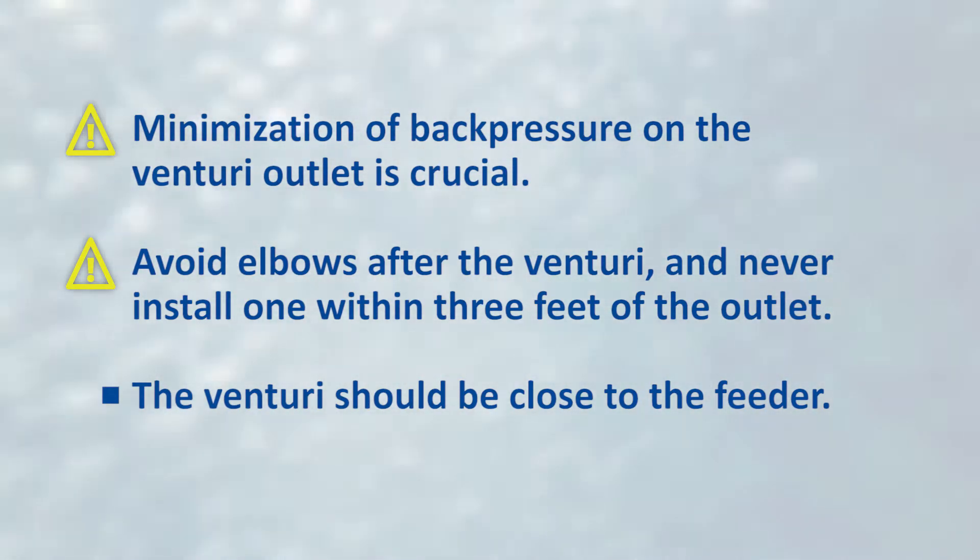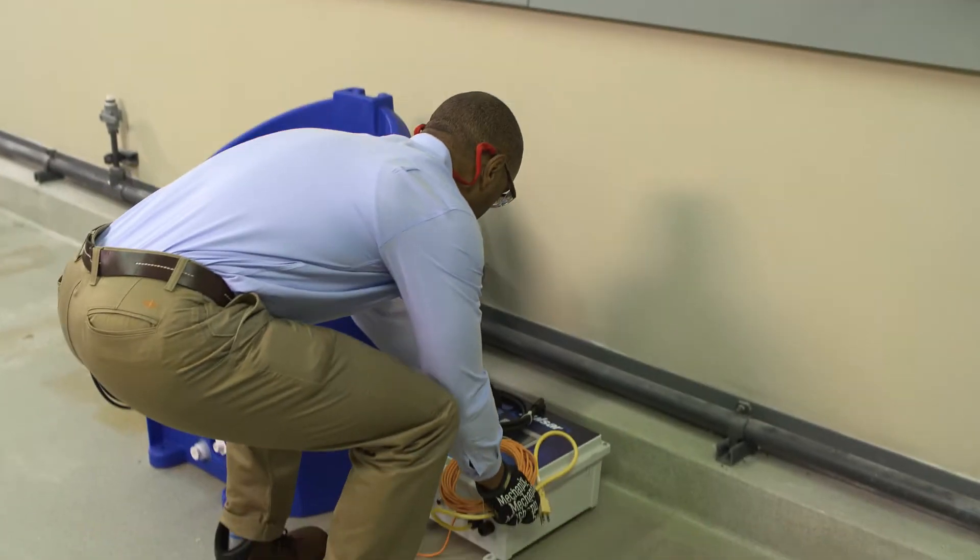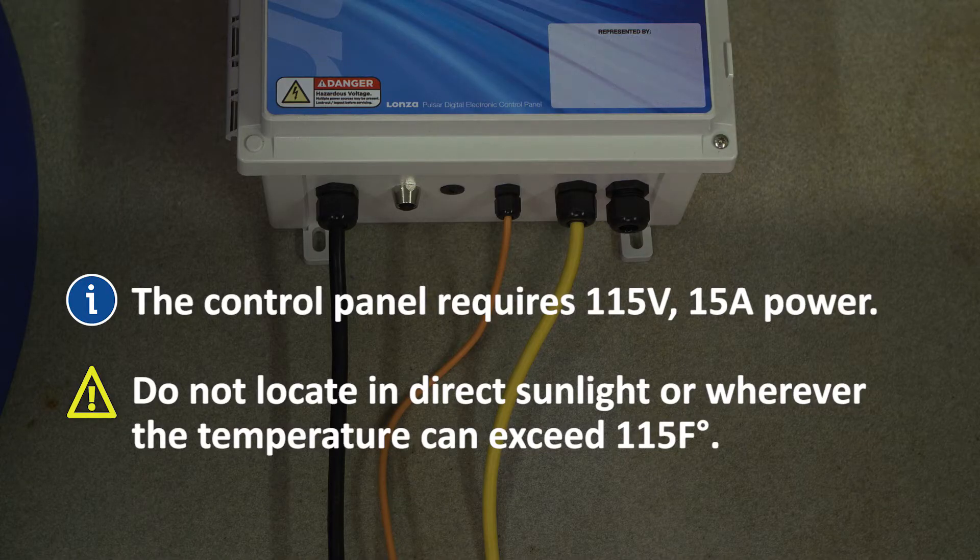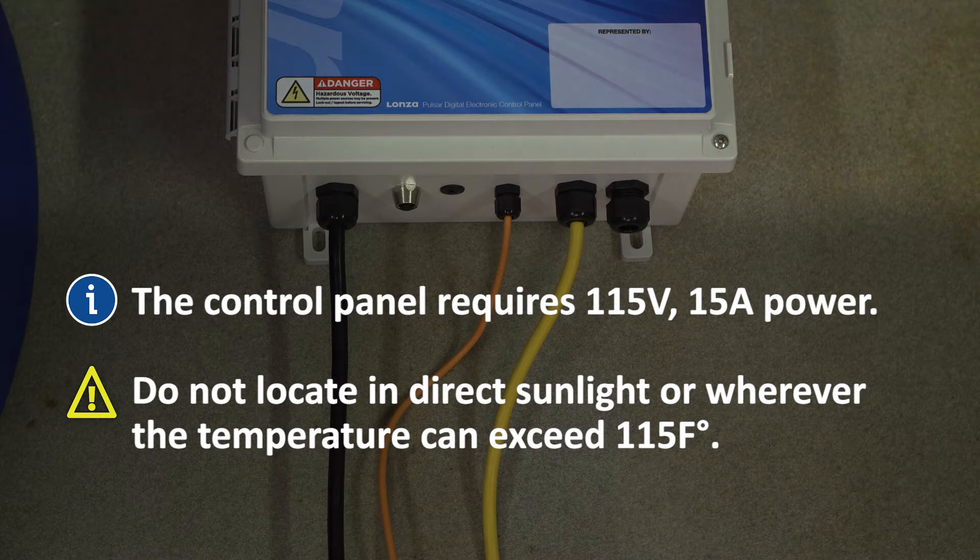The venturi should be close to the feeder to reduce distance and elevation between the venturi suction and feeder discharge. Position the control panel close to the feeder. The control panel requires 115 volts, 15 amp power, which also powers the booster pump.